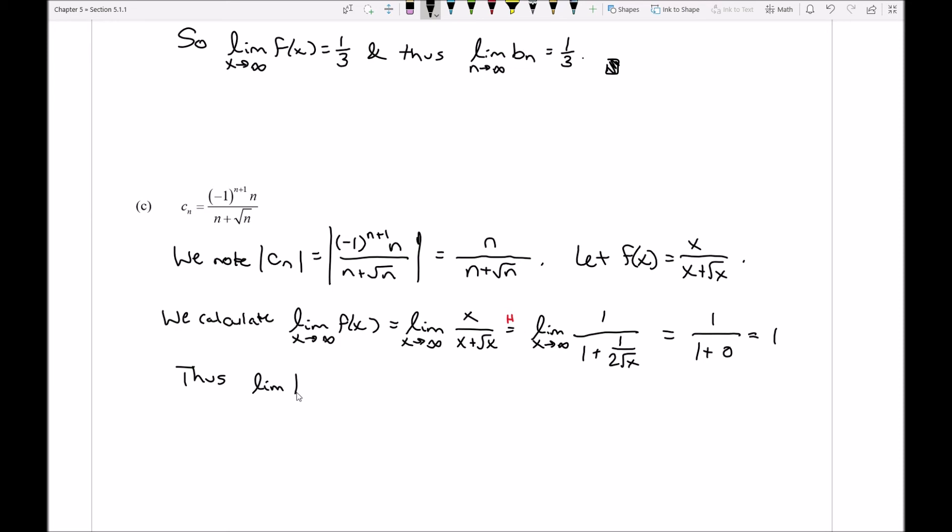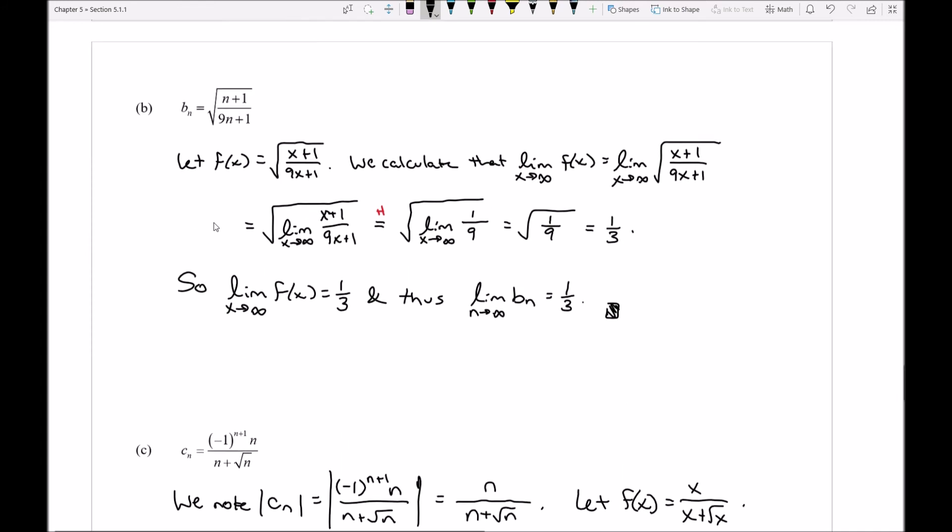Thus, the limit of the absolute value of c sub n, as n approaches infinity, is 1. Okay, so what does that tell me about the regular c sub n? Be very careful.